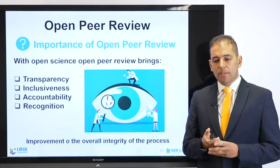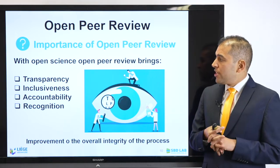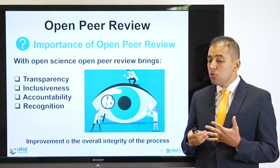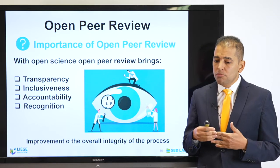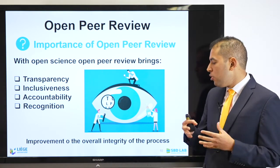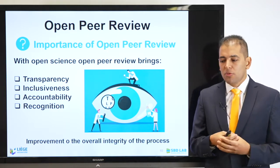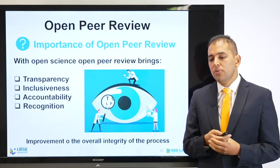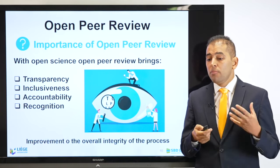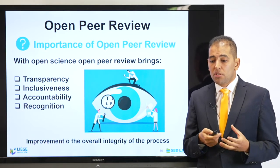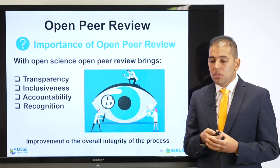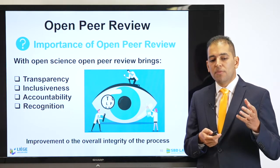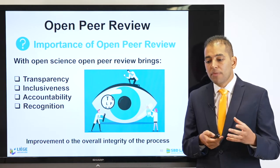What are the benefits of Open Peer Review? The importance of peer review is great. With Open Peer Review, it brings transparency, inclusiveness, accountability, recognition, and improvement of the overall integrity of the process. Because we have a lot of problems in the classical peer-reviewing process, Open Peer Review is an opportunity to bring more transparency so that readers can see exactly what was reported. It will have greater accountability because people will trust the journal — they can see if a comment was correct or not, and they can learn from it.